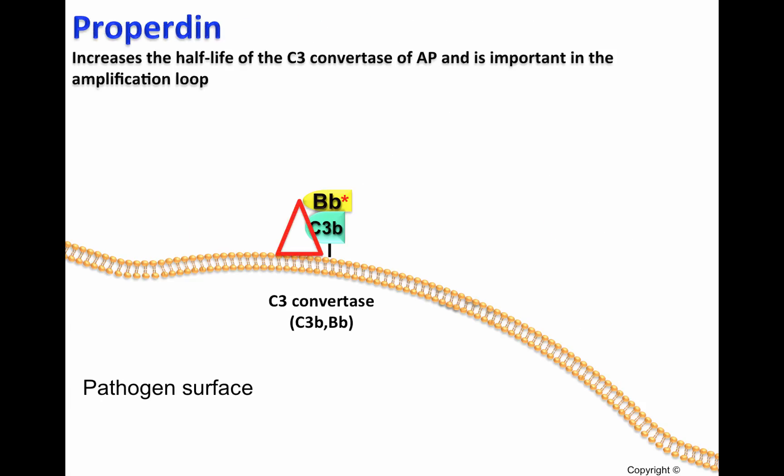Properdin will recognize the C3 convertase of the alternative pathway and increase the half-life of this convertase, which means that this C3 convertase will be able to cleave many more molecules of C3, generating many molecules of C3b that later on will be deposited on the cell surface of pathogens.